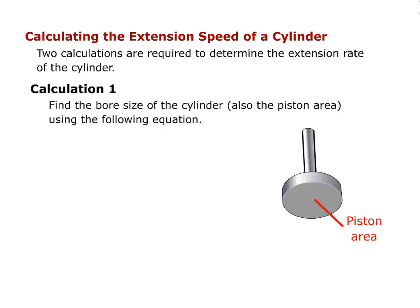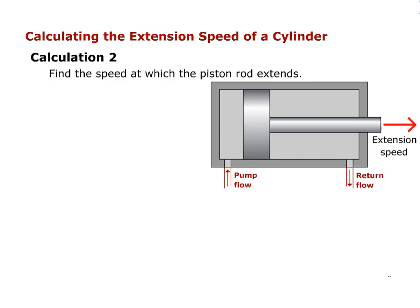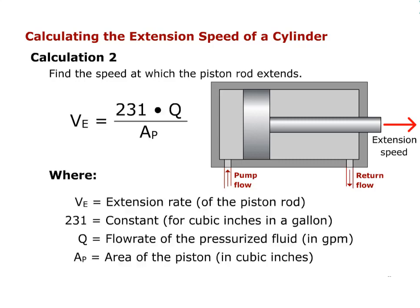Calculation 1: Find the bore size of the cylinder, which is also the piston area, using the following equation. Piston area equals pi times the diameter of the piston squared divided by 4. Calculation 2: Find the speed at which the piston rod extends. Velocity, or extension rate, of the piston rod equals 231 times the flow rate divided by the area of the piston.